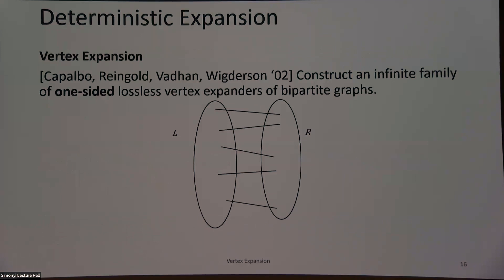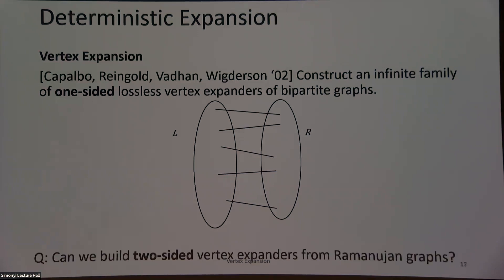What about vertex expansion? There's a very impressive result of Capalbo, Reingold, Vadhan, and Wigderson who showed an infinite family of one-sided lossless expanders. By one-sided, I mean a bipartite graph where the left side is bigger than the right side, and small subsets on the left-hand side expand losslessly to the right-hand side. This is done via the zigzag product. We know expansion from left to right, but there are no guarantees about right to left. So what we're thinking about now is: can we create some kind of two-sided lossless expander?